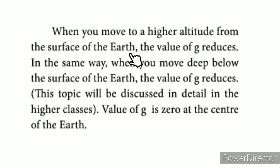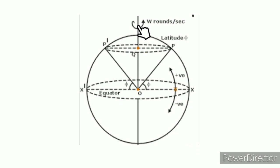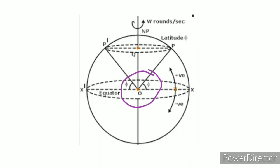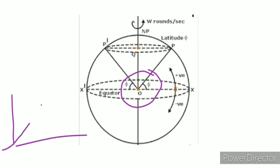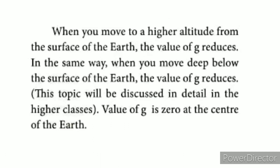In the same way, when you move deep below the surface of the Earth, the value of g reduces. At the core and center of the Earth, the value of g decreases further. The graph shows that at the surface g is maximum, and as you go deeper toward the center, g approaches zero at the center of the Earth.